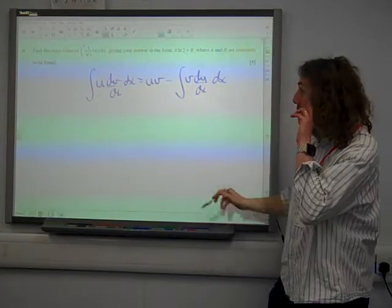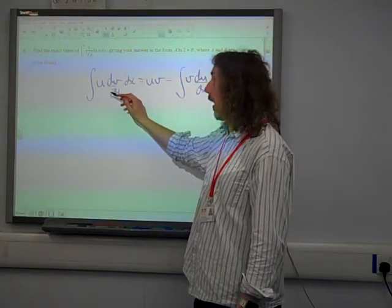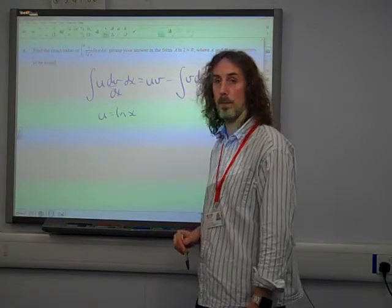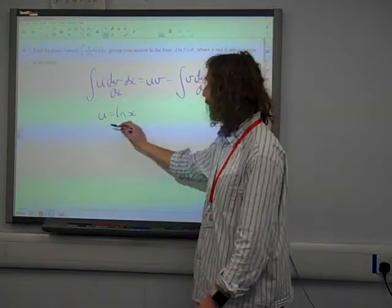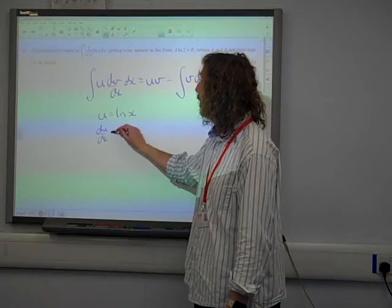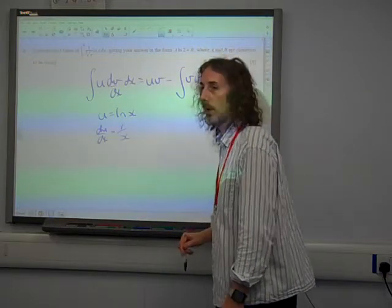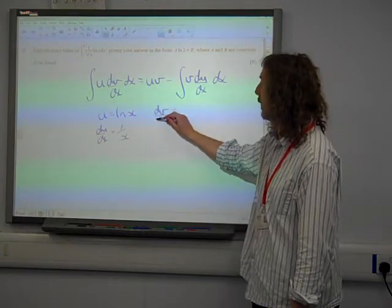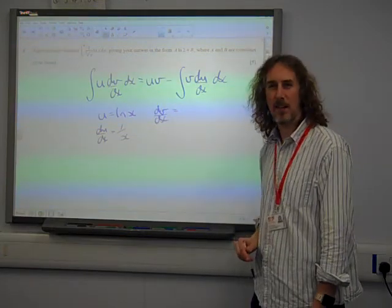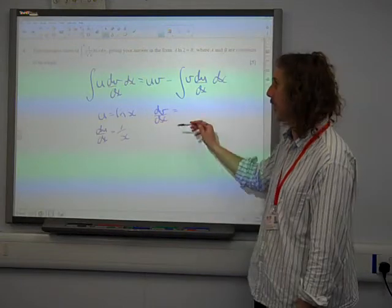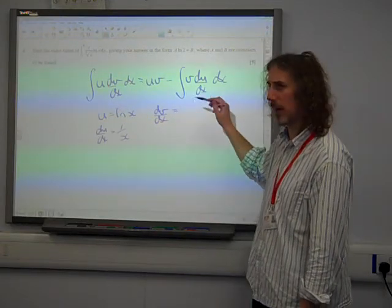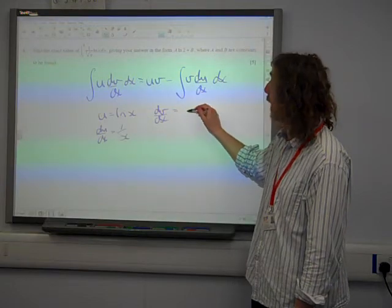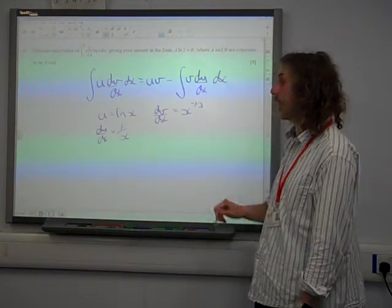So we're going to set up, in this case, the thing that we are going to differentiate is ln(x), because we know how to differentiate that. That goes to 1 over x. And the thing we're going to integrate, the dV/dx bit, it's a slightly odd way around to do this in this question, but that is 1 over x to the power of a third, 1 over cube root of x, which is x to the minus a third.